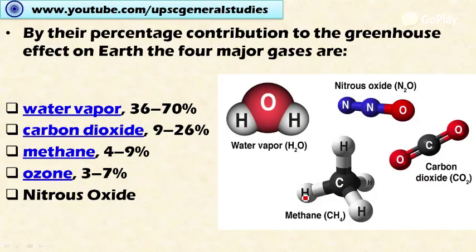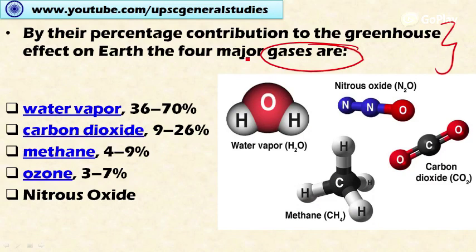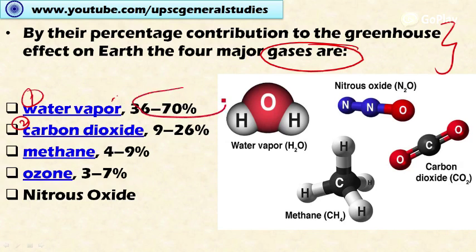Looking at the percentage contribution to the greenhouse effect on Earth, the four major gases are: water vapor, which is responsible for 36 to 70% of the warming; carbon dioxide at 9 to 26%; methane at 4 to 9%; and ozone at 3 to 7%.